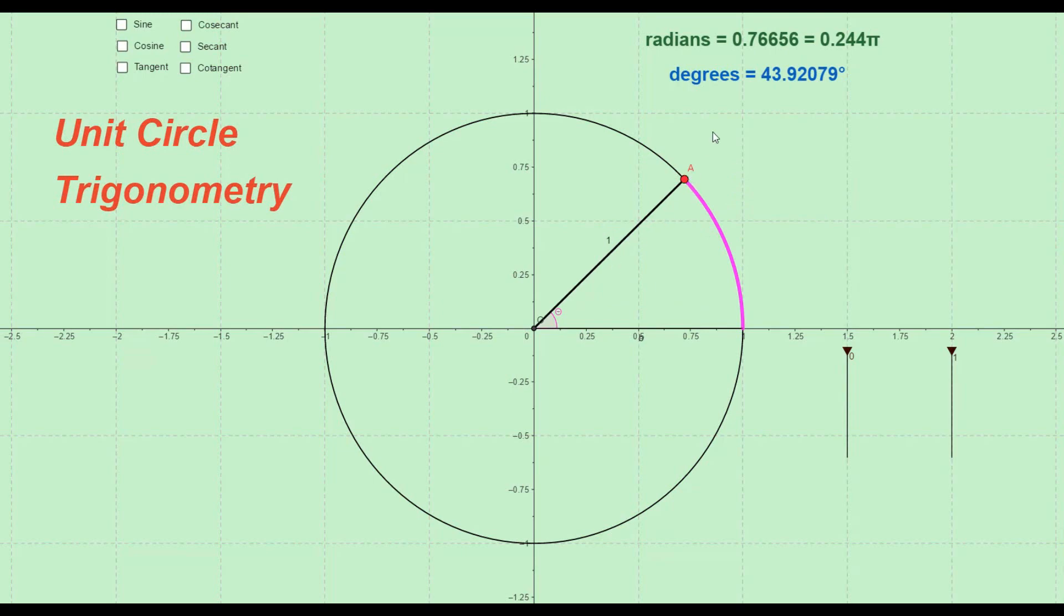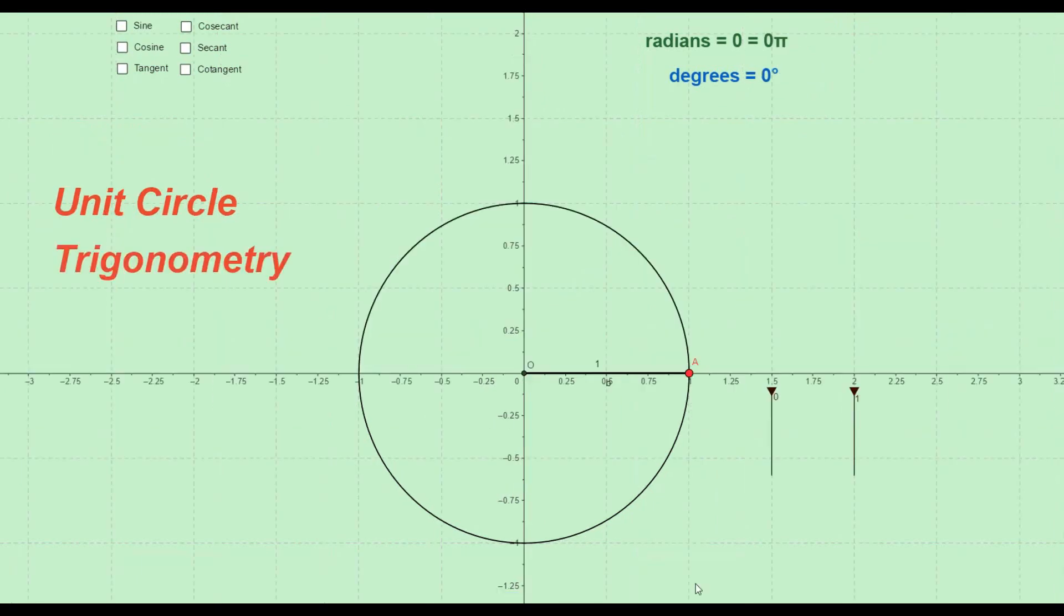You also see this pi here. The angles in radians are expressed as multiples of pi just to make things easier for us. Now since we know that the circumference is 2 pi times radius of the circle and in our case the radius is 1 unit, so it makes the complete angle which is 360 degrees equal to 2 pi radians and hence making 1 radian equal to 180 divided by pi degrees.